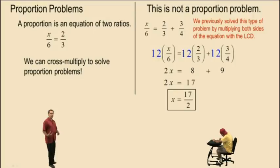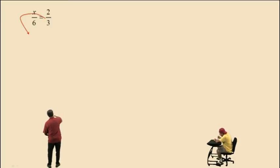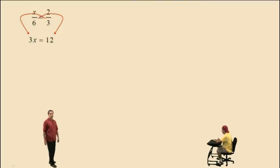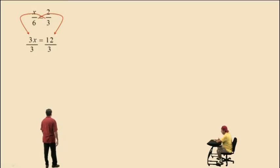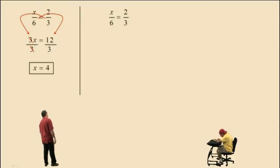Now let's solve some proportion problems by cross multiplying. Here we have a proportion: x over 6 equals 2 over 3. We cross multiply — going this way, we get 3 times x; going the other way, 6 times 2, which is 12. Now to solve for x, we divide both sides by 3. That gives us x equals 4. That's our answer to this proportion problem.